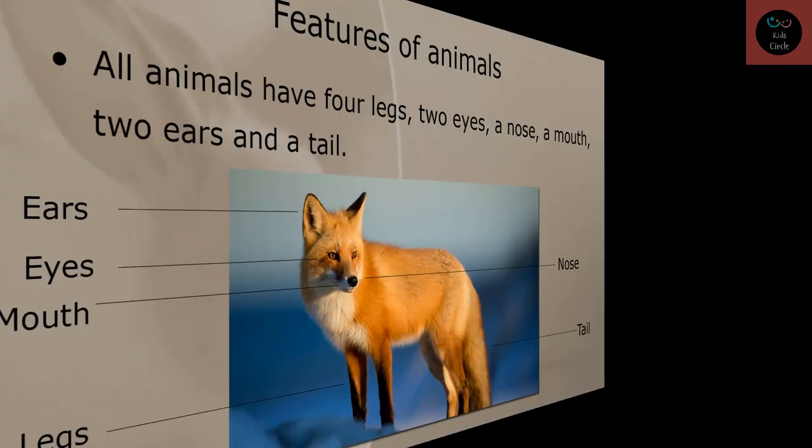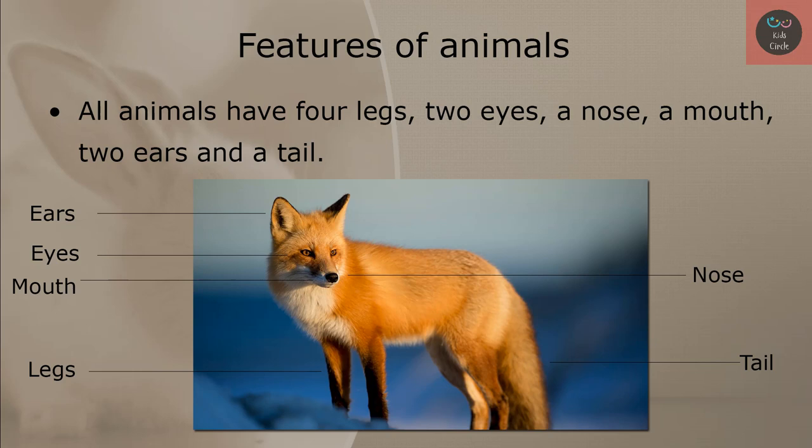Features of animals. All animals have four legs, two eyes, a nose, a mouth, two ears, and a tail.